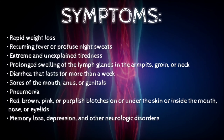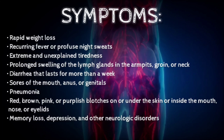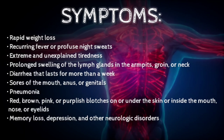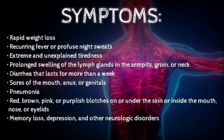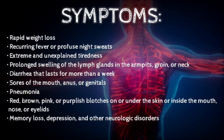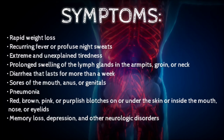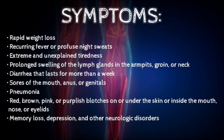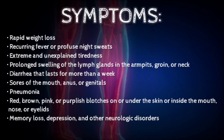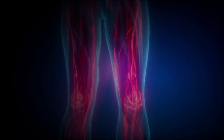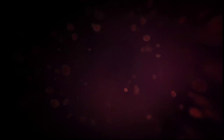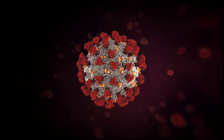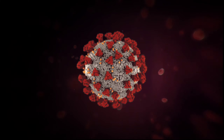What are the symptoms of HIV and AIDS? Here are some of the usual symptoms a person experiences upon getting infected: rapid weight loss, recurring fever or profuse night sweats, extreme and unexplained fatigue, prolonged swelling of lymph glands in the armpits, groin, or neck, diarrhea that lasts more than a week, sores of the mouth, anus, or genitals, pneumonia, red, brown, pink, or purplish blotches on or under the skin or inside the mouth, nose, or eyelids, and memory loss, depression, and other neurologic disorders. Upon experiencing a few of these symptoms, it is best to seek a doctor immediately.